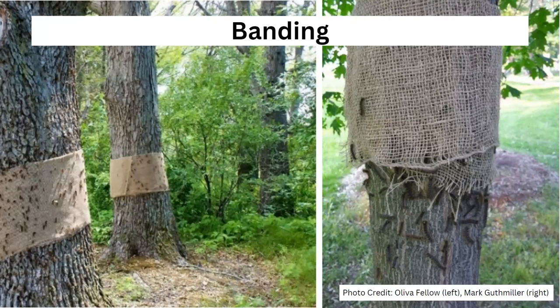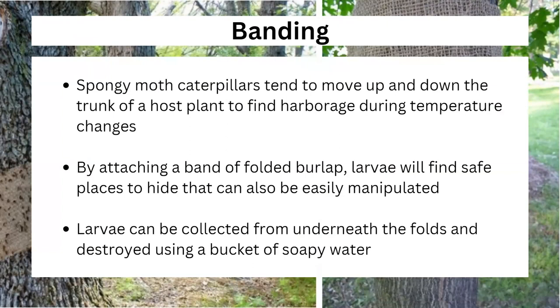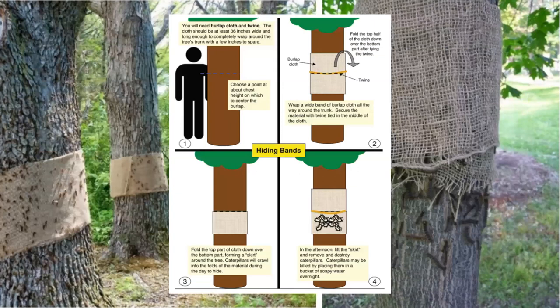A few methods that we can use to help control Spongy Moth. Banding is one that you can actually do at home. What you're seeing here is a picture of a banding practice, where someone has taken some burlap, tied it around a tree, and folded the burlap over. Spongy Moth caterpillars are going to move up and down the trunk of the tree and find harborage — a safe place underneath that folded burlap, either hiding from a predator or trying to stay warm. You can then go to the burlap yourself, find all of the larvae hiding underneath it, and destroy them by throwing them in a bucket of soapy water. You're going to pick a spot about chest height, tie the burlap to the tree with some twine, and fold it over where you tied it.